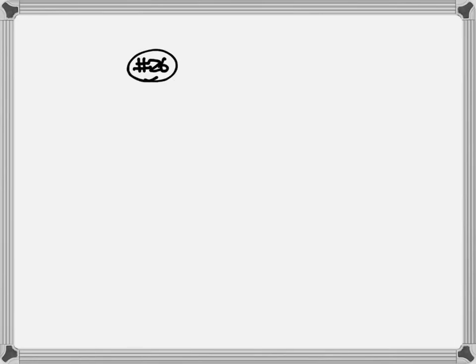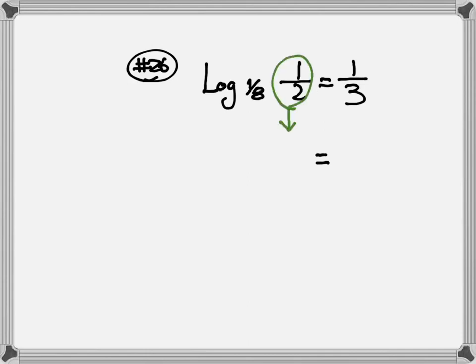Let's look at number 26. Here we have log base 1/8 of 1/2 equal to 1/3. It doesn't matter what kind of weird number they give to you — all we need to do is just follow the steps. Step 1, keep the equal sign. The 1/2 goes straight down. Then your base, the little number, goes to the other side, so it becomes big 1/8. Then after that, you bump the 1/3 up to become the exponent.